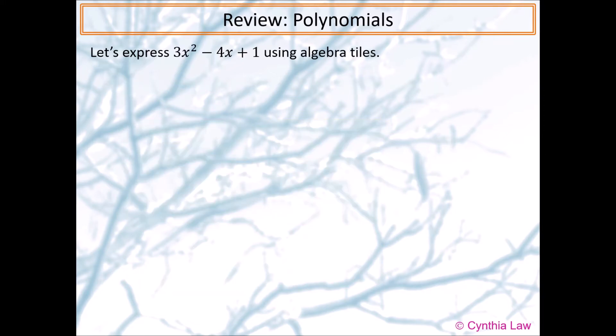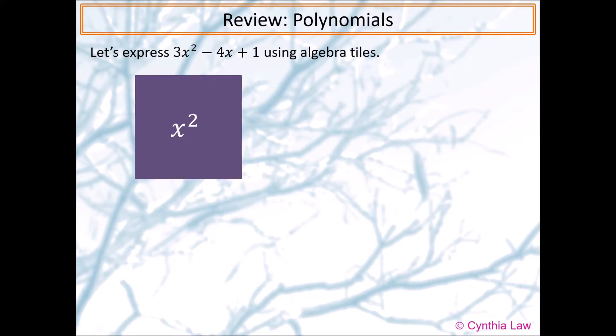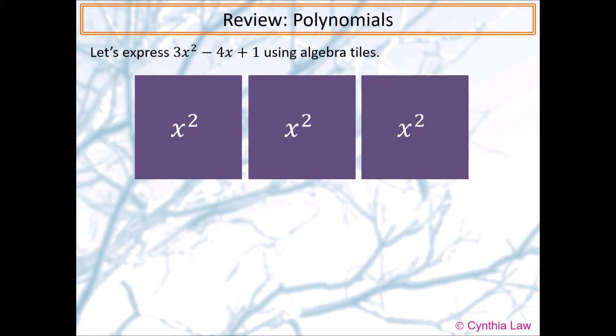Let's look at a quick example. We want to express 3x squared subtract 4x plus 1 using algebra tiles. For the x squared term, because the coefficient is positive 3, we use a purple square to represent x squared. We need 3 of them in total.